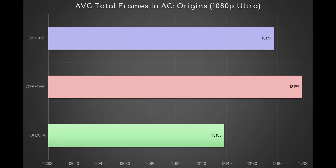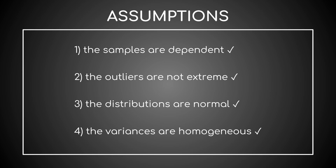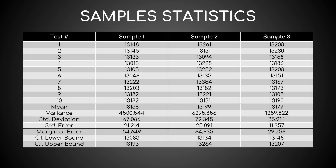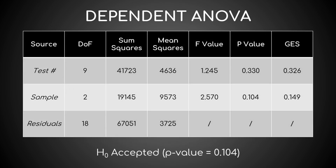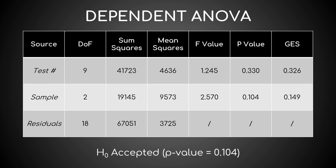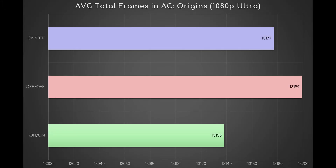Finally, let's repeat the ANOVA on the total frames. Assumptions check, descriptive statistics, two hypotheses — triple check. Our studio returns a p-value of 0.104, so H0 is once again accepted. To recap: Assassin's Creed Origins does not exhibit any CPPC effect from a statistical point of view. Its performance will be equal with each of the three combos.